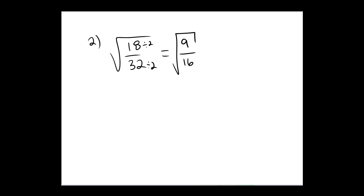All under a square root. Now using the square root rule that I wrote on the other page, the distribution of exponents through division, this is square root of 9 over square root of 16.